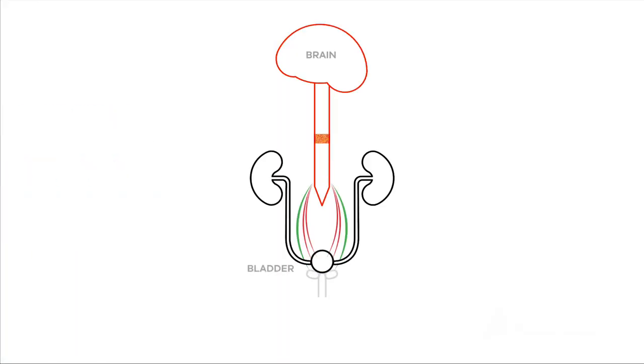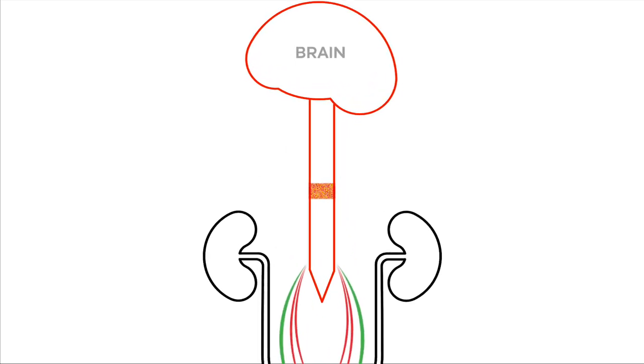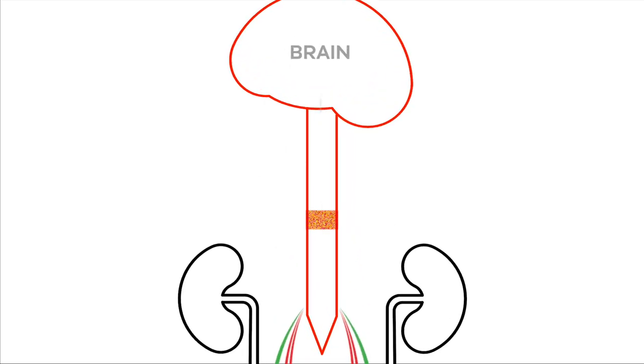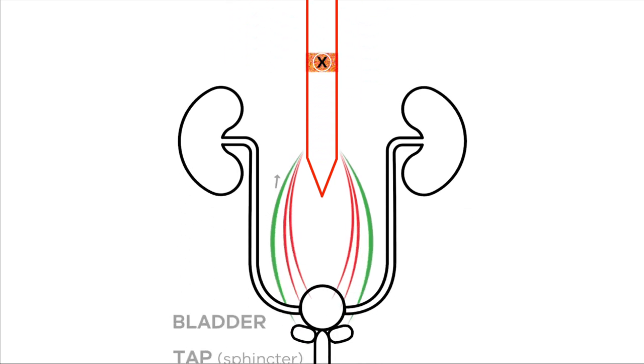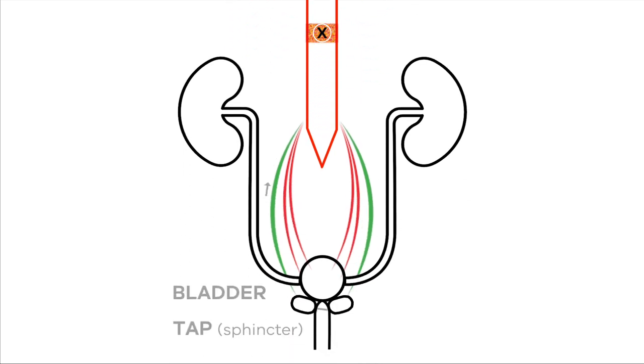With an upper motor neuron lesion or reflex bladder, the brain has difficulty coordinating the filling and emptying of the bladder because of the spinal injury. Even though the spine is damaged, messages flow below the injury between the spine and the bladder through the automatic nerves, getting the bladder ready to fill.